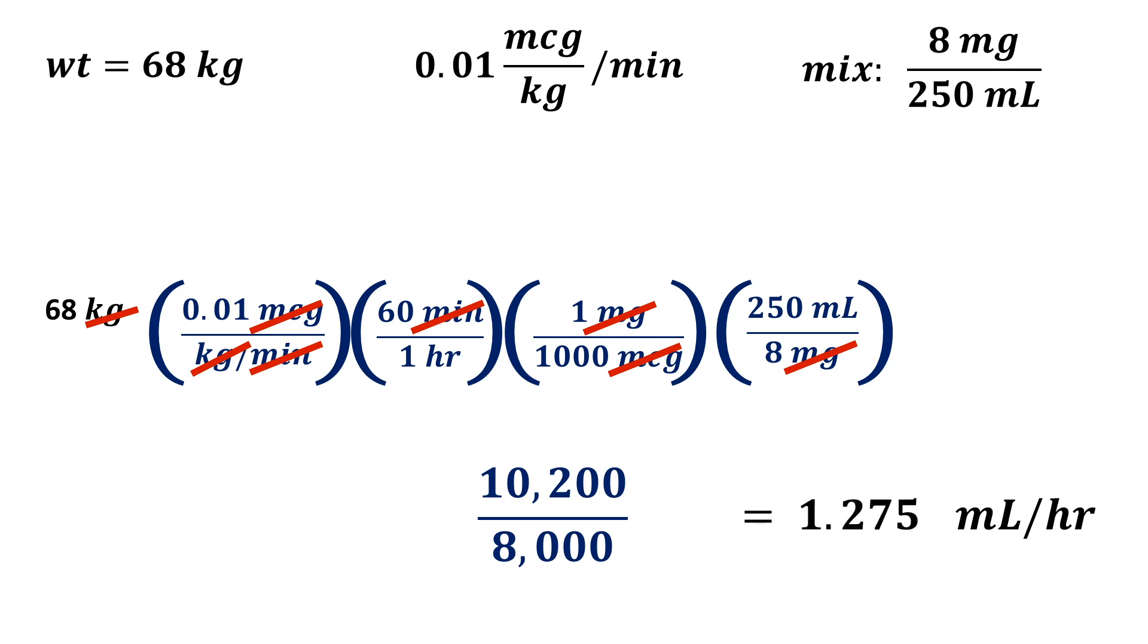In order to do this on a calculator all you have to do is take the top terms, multiply them all together, hit the equal sign, then hit divide by 1,000, equal sign, and then divide by 8, equal sign, and it will give you the same answer.